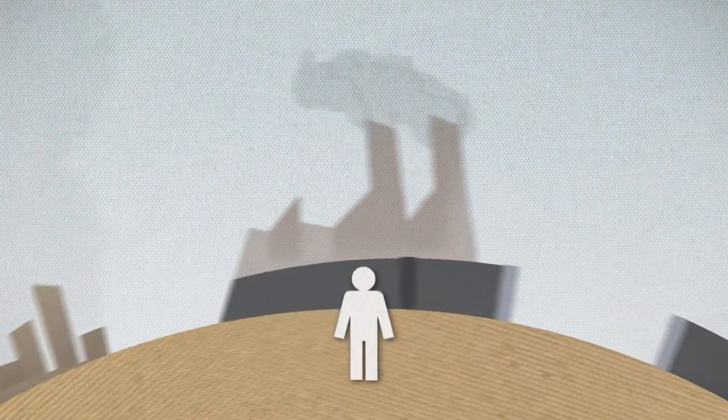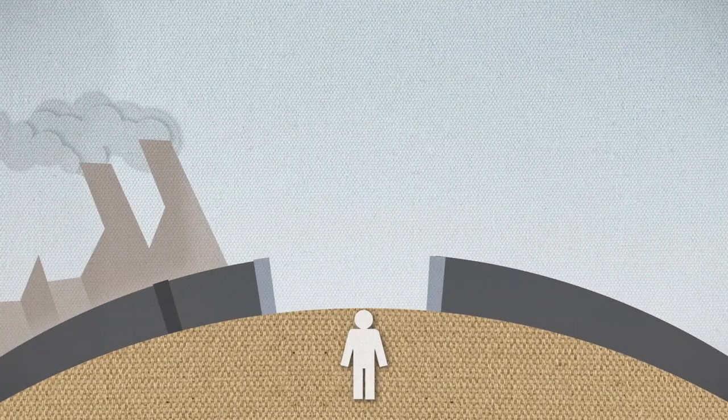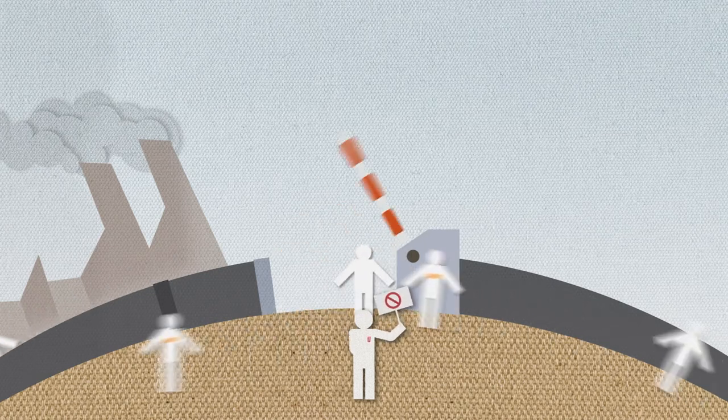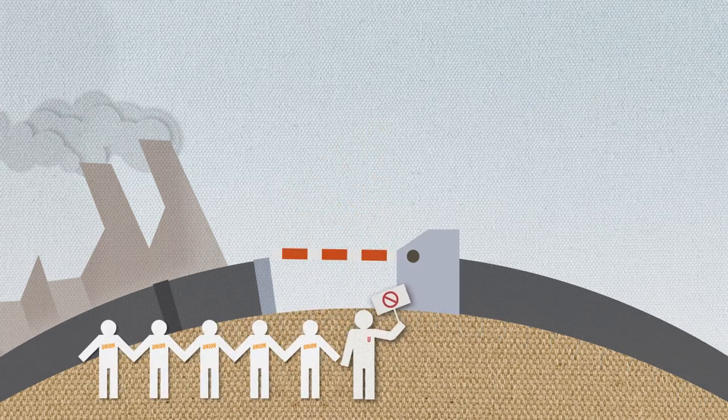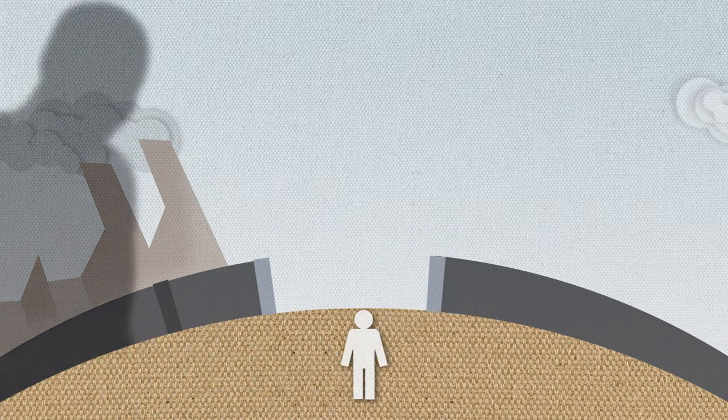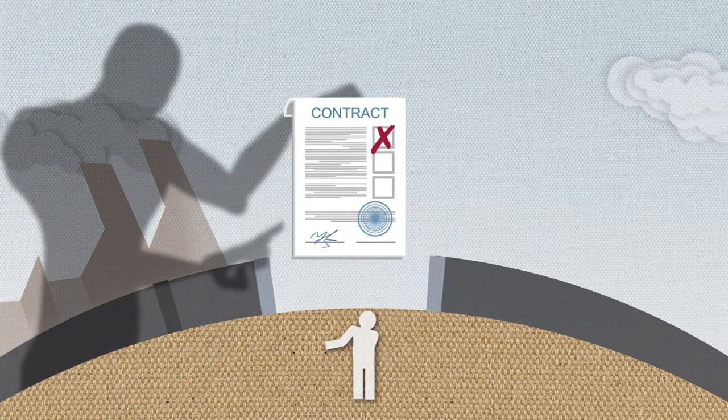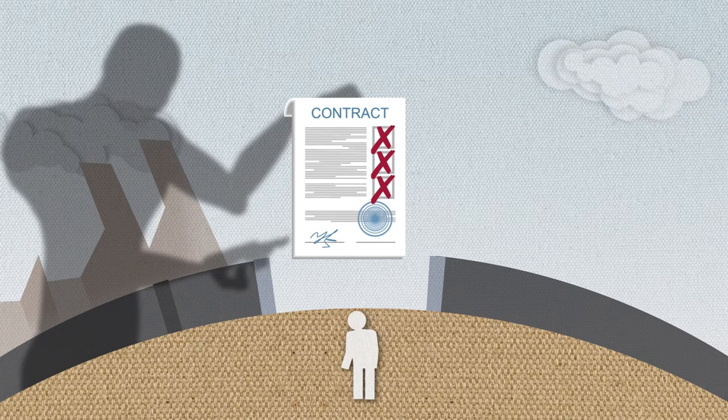Other unlawful practices include blacklisting: denying employment to trade union members or workers who have made health and safety complaints. False self-employment: avoiding obligations to employees or avoiding paying tax.